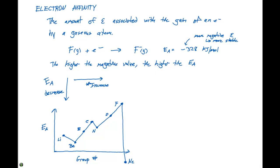you need to think of, I have a particular atom, I'm going to give it an electron. Will this want to be stabilized or will it want to be destabilized? The higher the negative value, the higher the electron affinity.